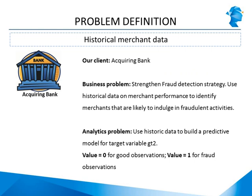This is where our case study comes in. Our client is the acquiring bank, or the merchant's bank. The business problem is to strengthen the fraud detection strategy by using historical data on merchant performance to identify merchants likely to indulge in fraudulent activities. The acquiring bank is building better predictive models to strengthen its fraud detection strategy. The analytics problem is to use historic data to build a predictive model for fraudulent activities. The target variable is gt2, which denotes whether a merchant was fraudulent or not — zero for good merchants and one for fraud merchants.